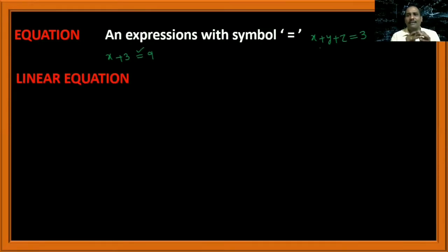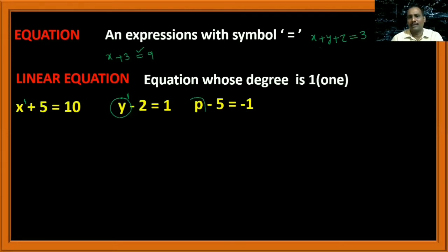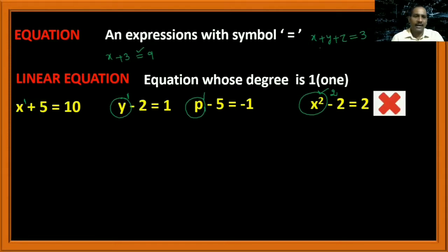Then what is a linear equation? A linear equation is an equation whose degree is 1. For example, x plus 5 equal to 10 — the degree here is 1. The degree of p in a similar equation is also 1. So all these are called linear equations. When it comes to x² minus 2 equal to 2, the degree is 2, so it is not a linear equation. All these linear equations consist of only one variable — here only x, here only y, here only p — so these are called linear equations in one variable.